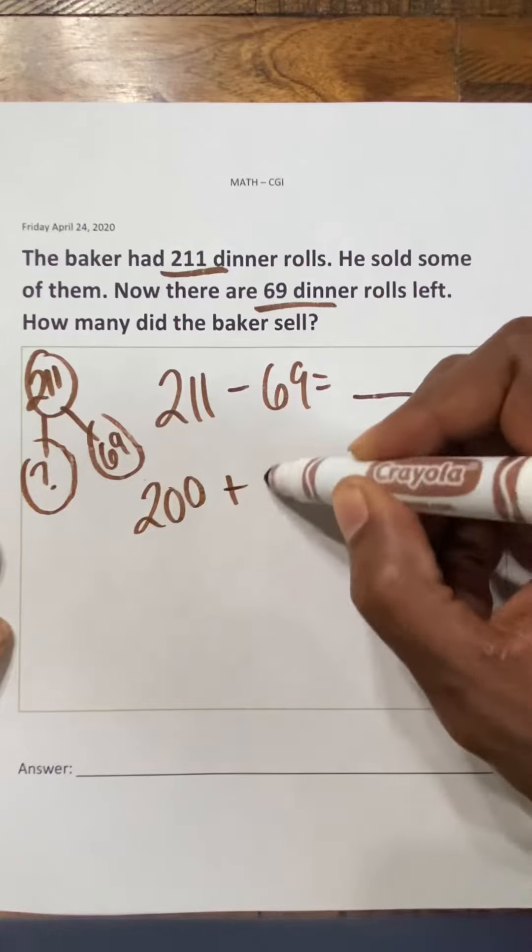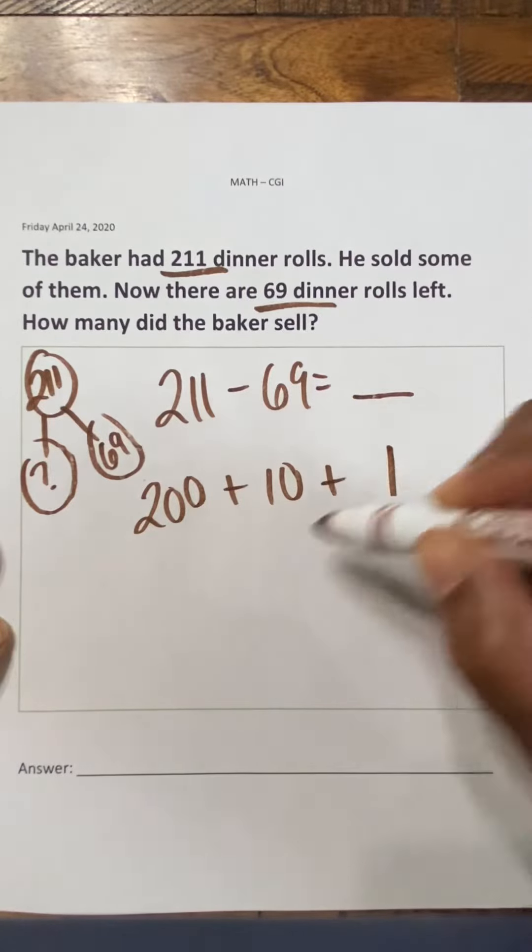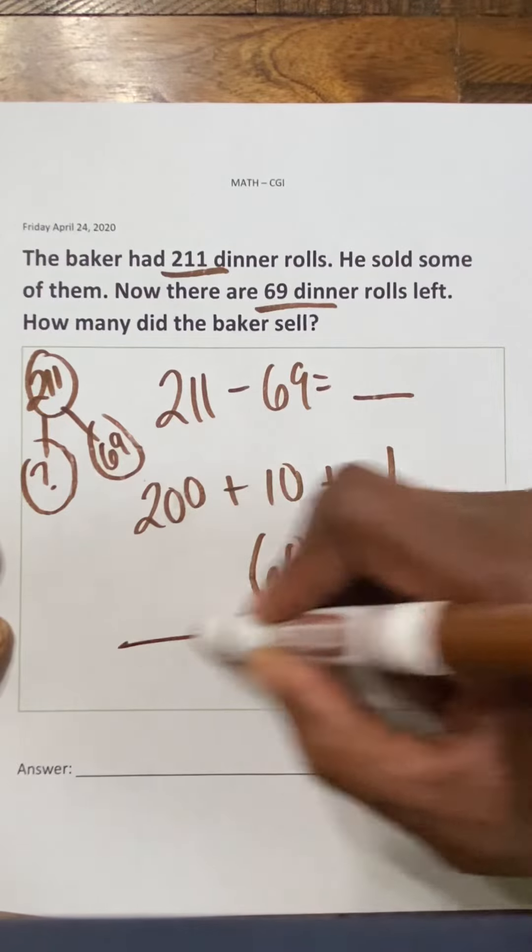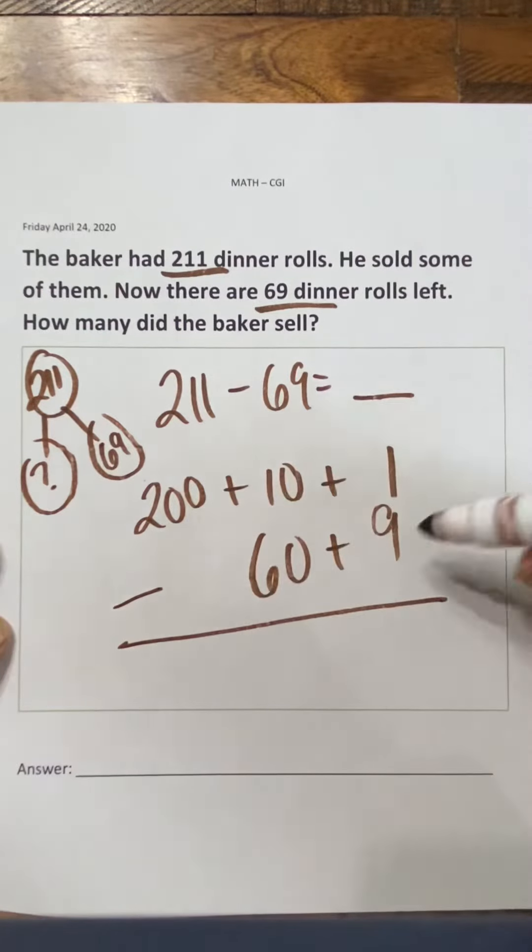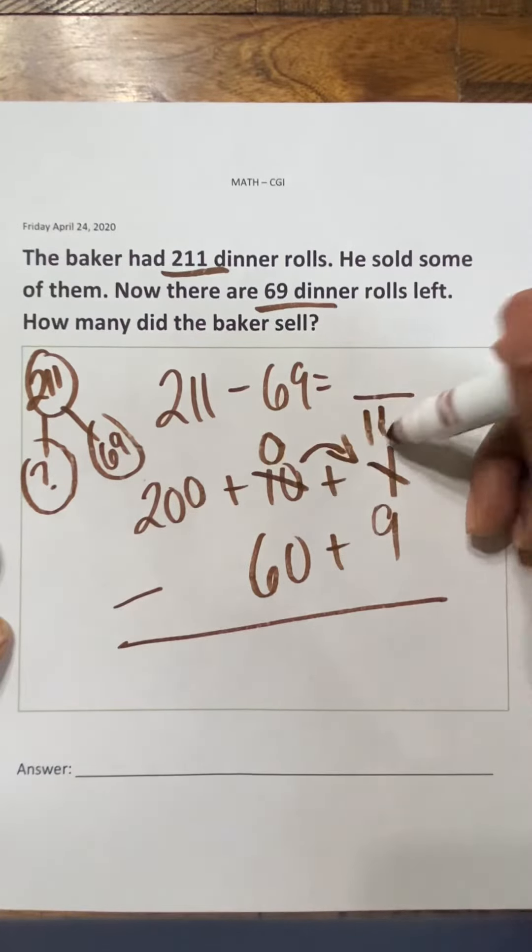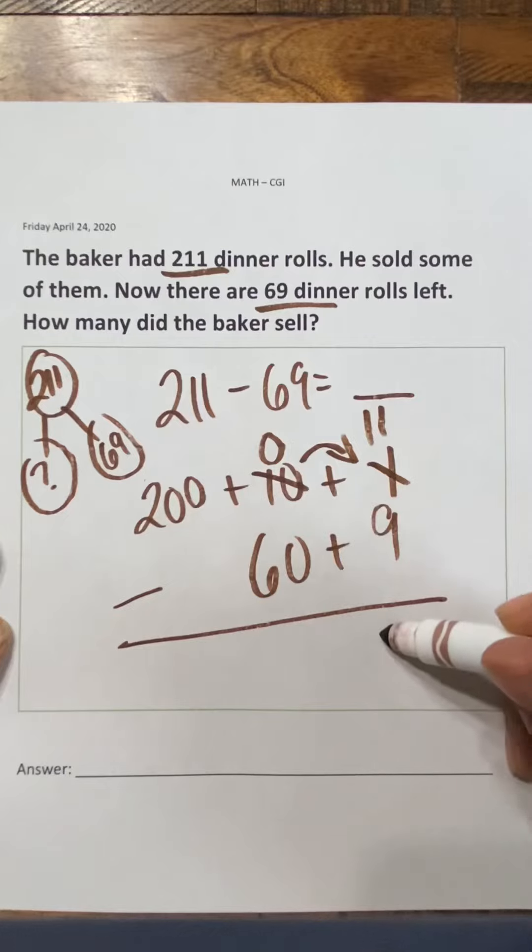200 plus 10 plus 1. We're going to subtract 60 plus 9. I can't take 9 from 1. There's not enough there. I move my 10. 11 minus 9 is 2.